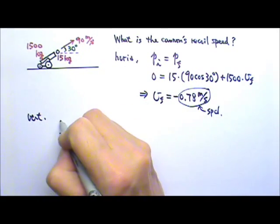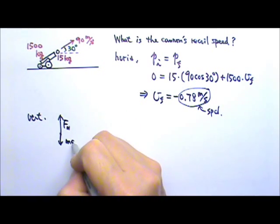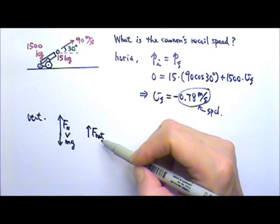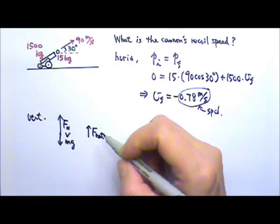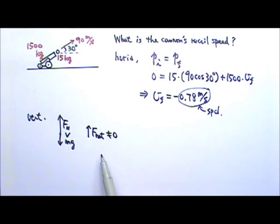Therefore the ground pushes back with a normal force that is bigger than Mg. So the net force on the whole system is not zero in the vertical direction. Therefore the momentum is not conserved in the vertical direction.